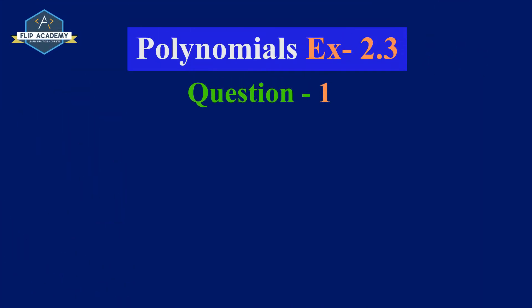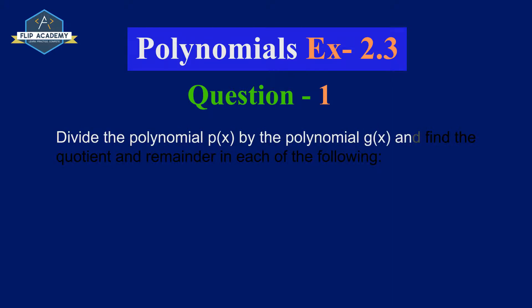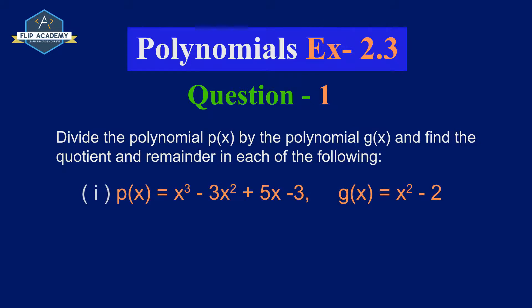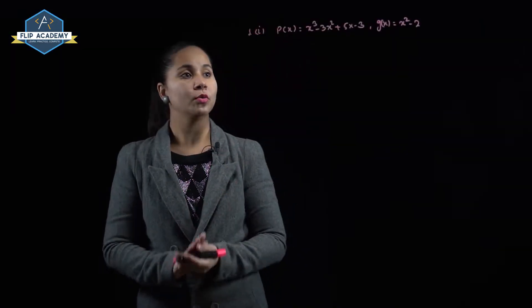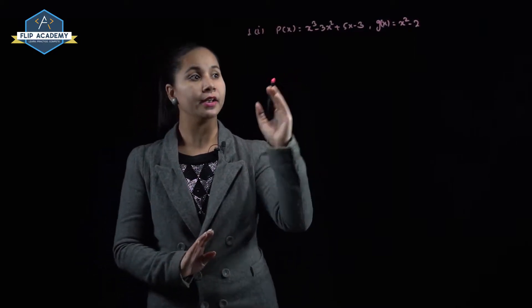Polynomials Exercise 2.3, Question 1: divide the polynomial p(x) by the polynomial g(x) and find the quotient and remainder. First part: p(x) = x³ - 3x² + 5x - 3 and g(x) = x² - 2 are given.